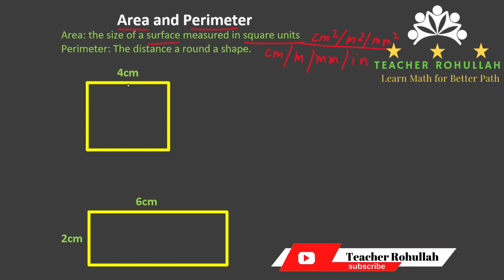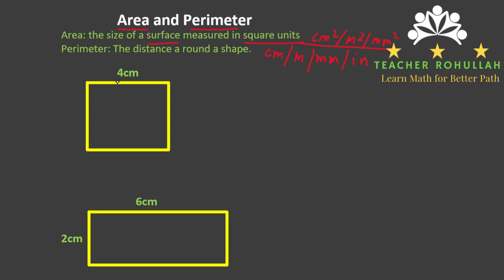Let's now start with the area of a square. The square shown here has sides of four centimeters — so this side is four centimeters, this side is also four centimeters, this side is four centimeters, and the bottom side is also four centimeters. The formula we can use for area is A equals...